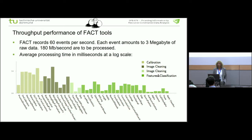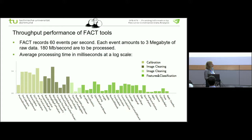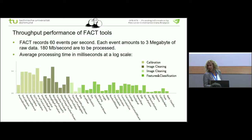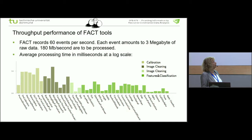Here you see the throughput performance of our FACT tools. We are aiming at real-time processing, and everybody says you cannot do that with Java. We re-implemented some things in Python but that was much slower. Speed is more about the computational concepts you realize than the programming language. Here you see the whole pipeline on a logarithmic timescale showing how much time each step uses. All the pre-processing takes much more time than the final machine learning classification or energy estimation step. We can process 180 megabytes per second — that's quite fast.